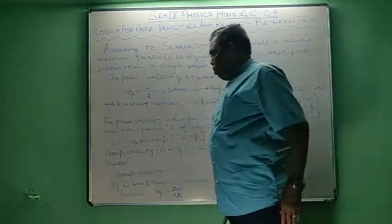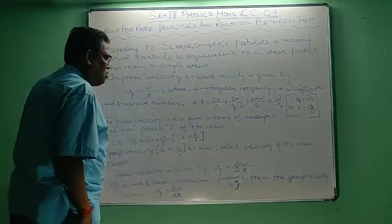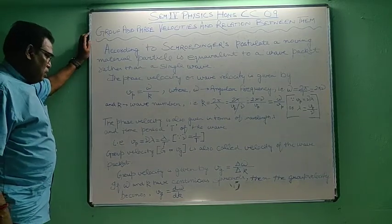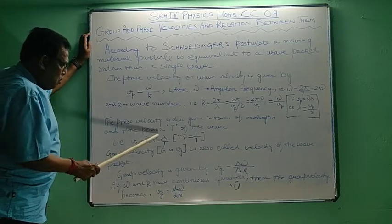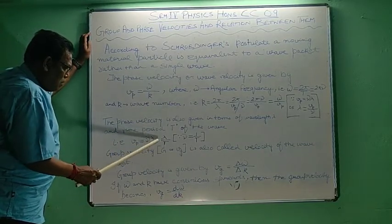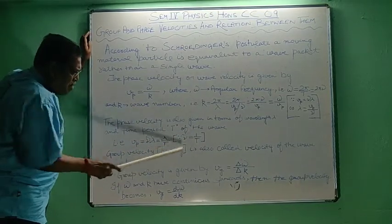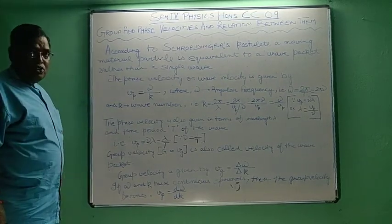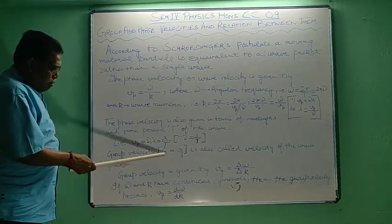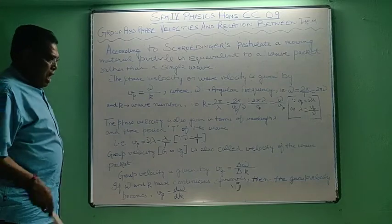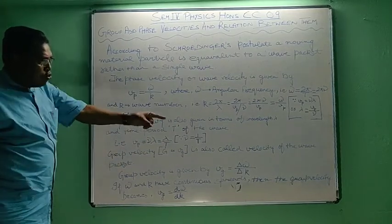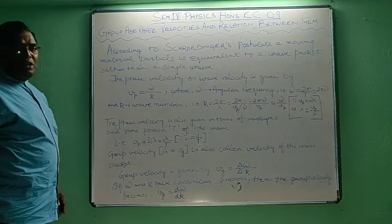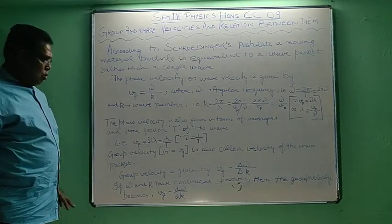The phase velocity is also given in terms of wavelength lambda and time period T of the wave: vp = nu·lambda = lambda/T, because nu = 1/T. Group velocity is denoted by vg, and it is also called the velocity of the wave packet — that is another name for group velocity.